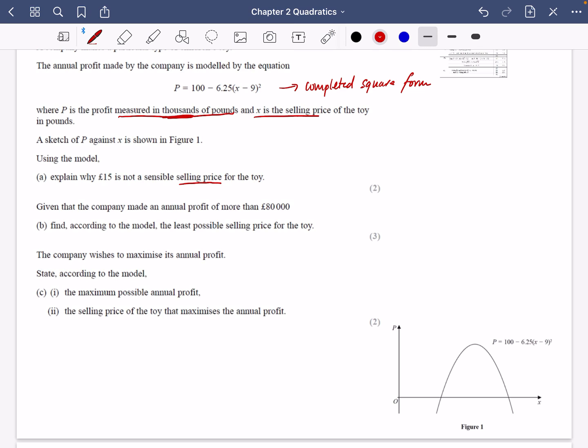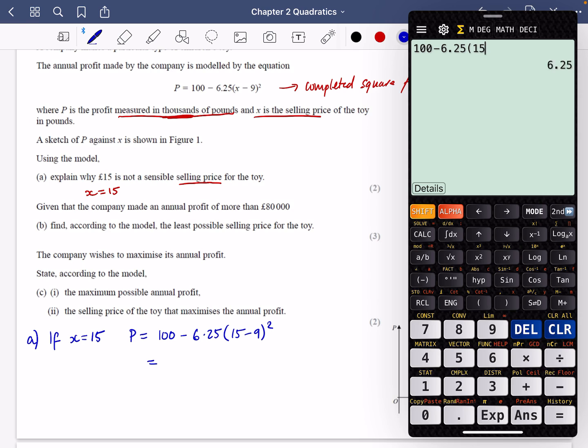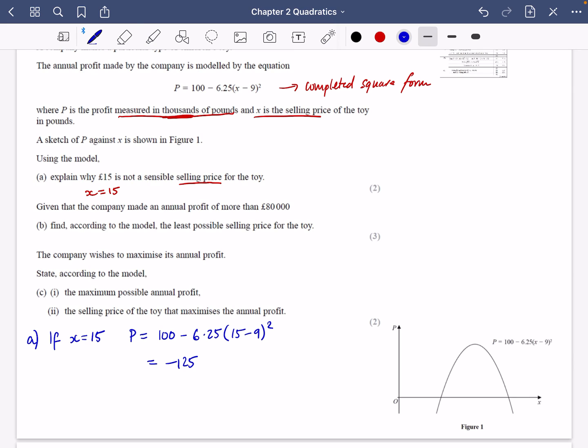It says using the model, explain why £15 is not a sensible selling price for the toy. So the selling price is x. So this is just saying that x equals 15. Let's have a look and see if x equals 15, what the problem might be. So if x is equal to 15, the profit would be equal to 100 - 6.25(15 - 9)². So it's going to be 100 - 6.25(15 - 9)², which is -125. It's not a sensible price because we want the profit to be positive. This selling price gives negative profit, i.e., a loss. So this isn't a sensible selling price. That's it. You just need to substitute in and say you get a negative.